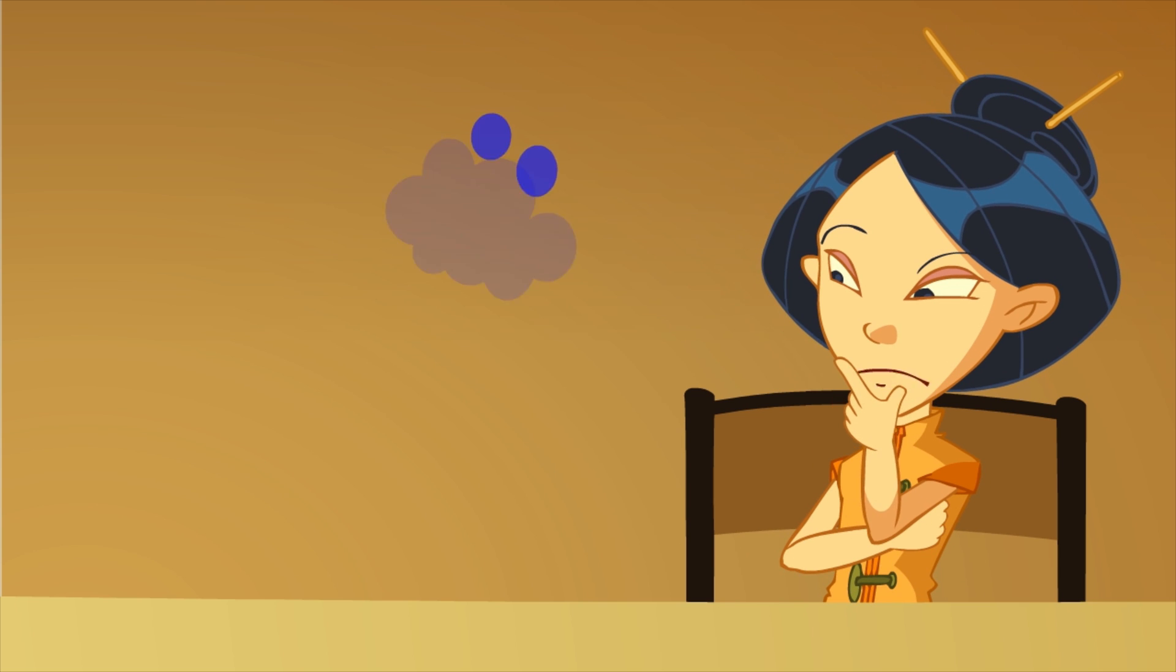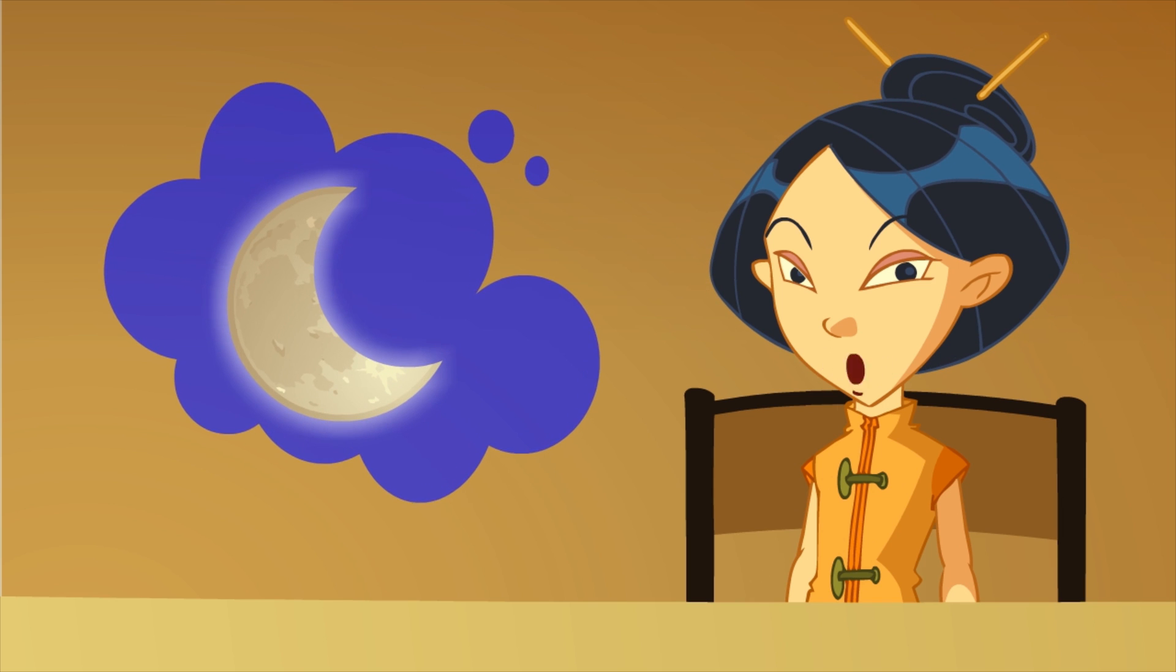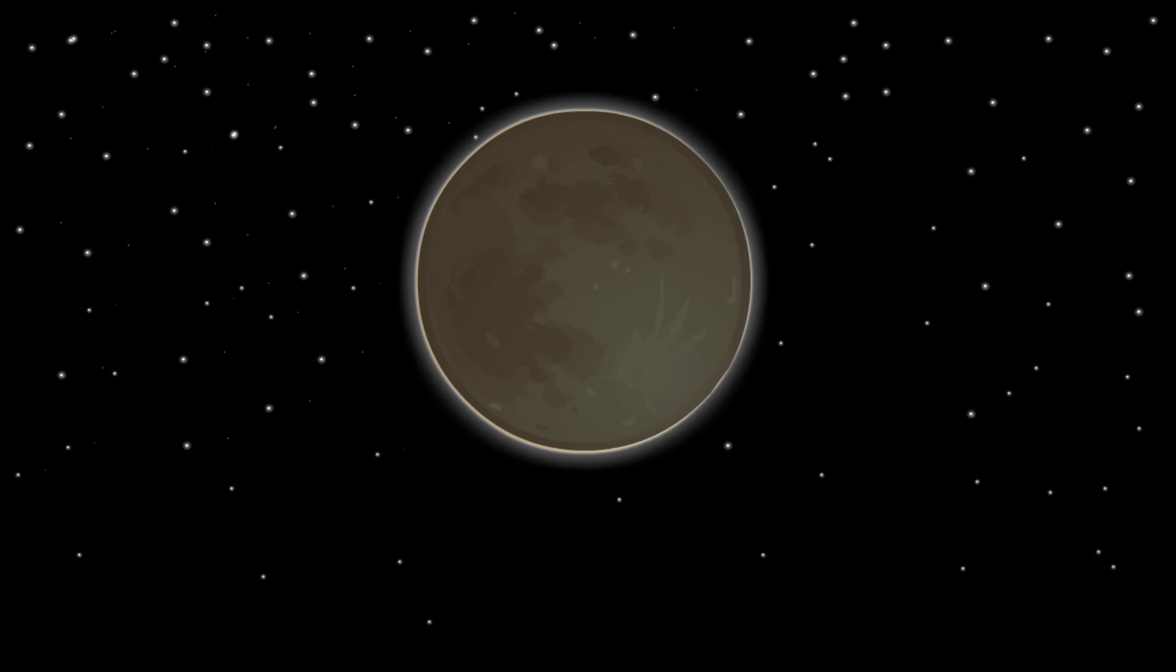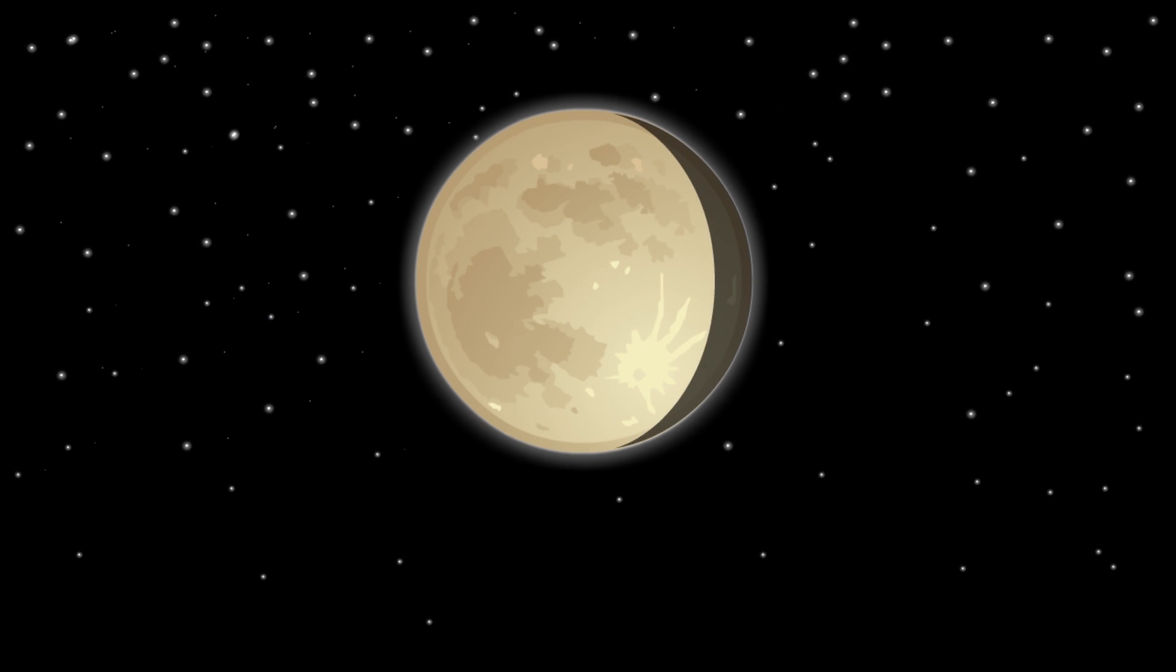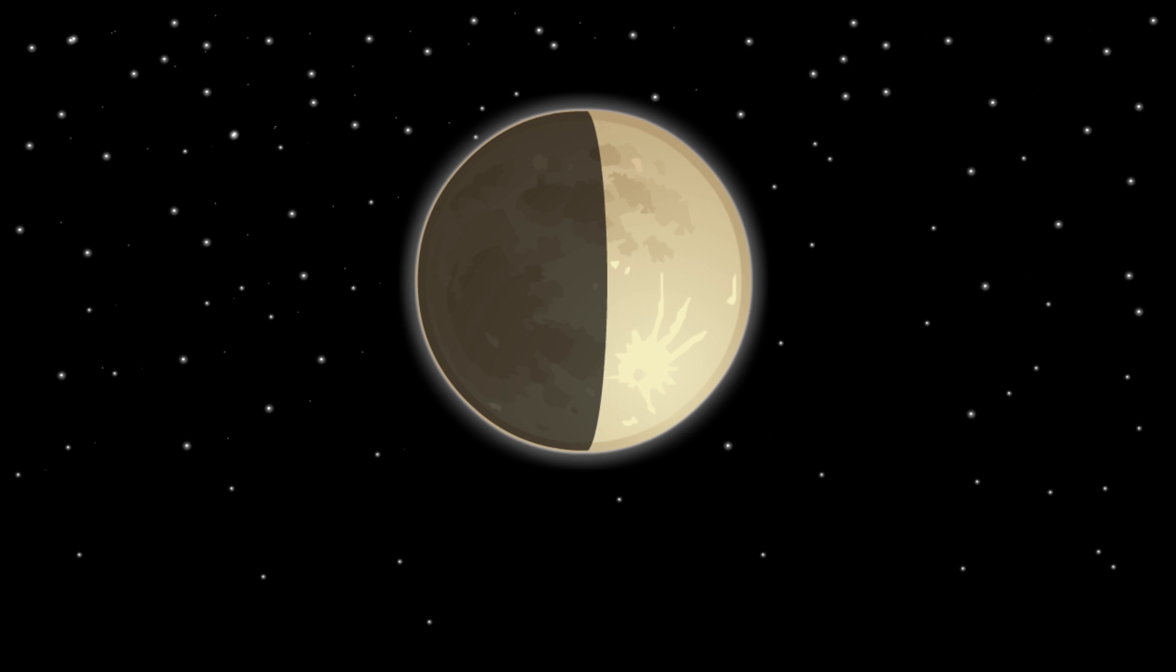So why do we always see different shapes? Some nights it's full, others we can see only half of it. Each one of those shapes is called phases of the Moon. As days go by, the light from the Sun reflecting on the Moon is different. That's why we see different lit up parts.